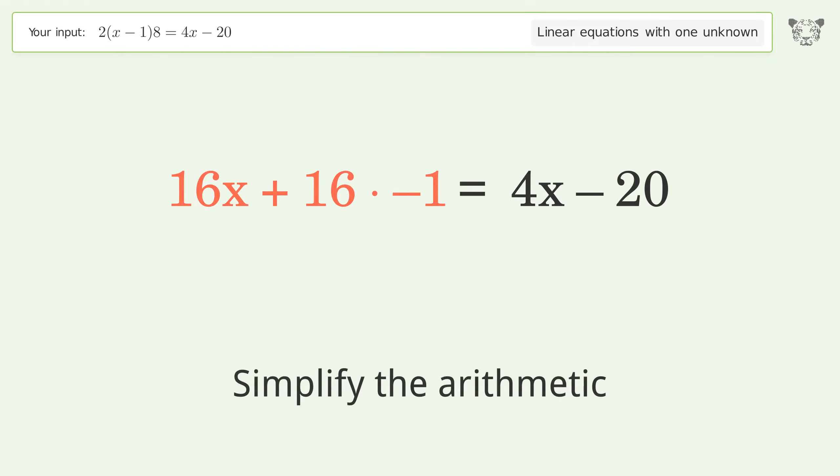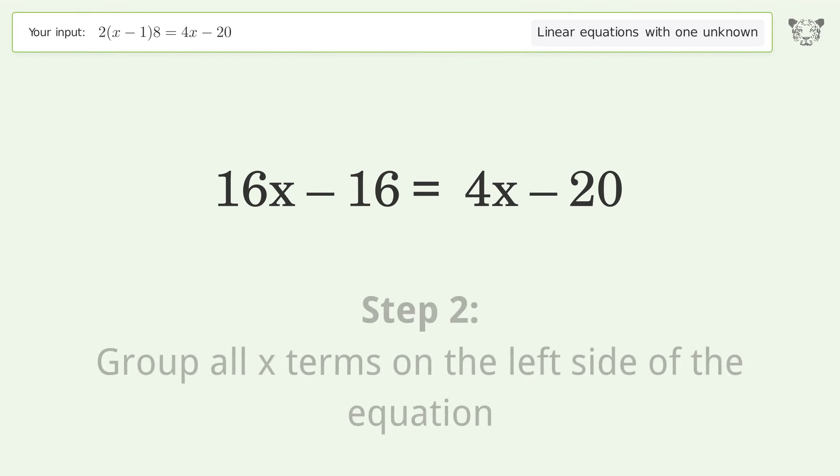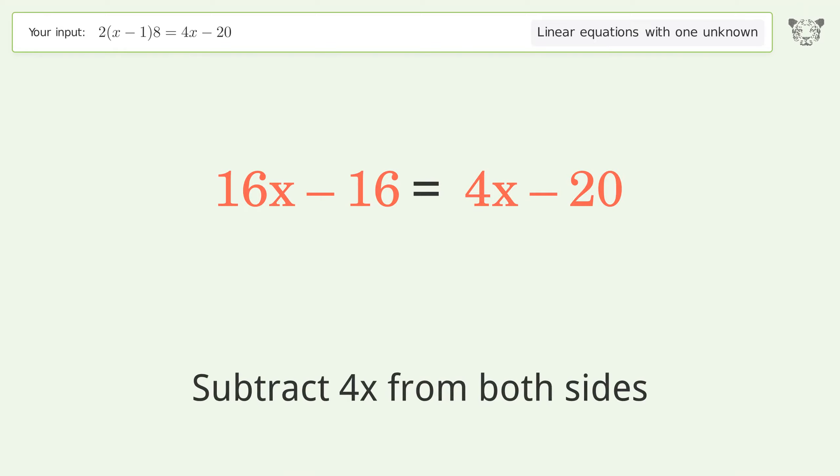Simplify the arithmetic. Group all x terms on the left side of the equation. Subtract 4x from both sides.